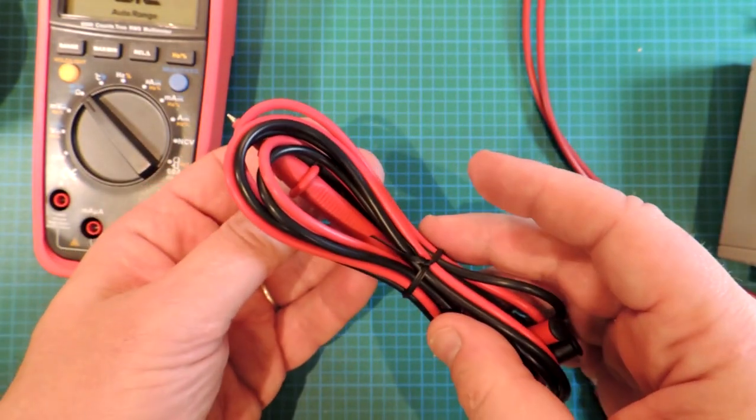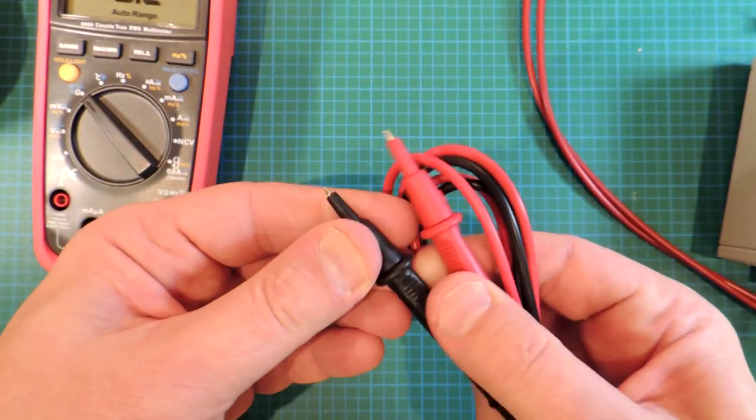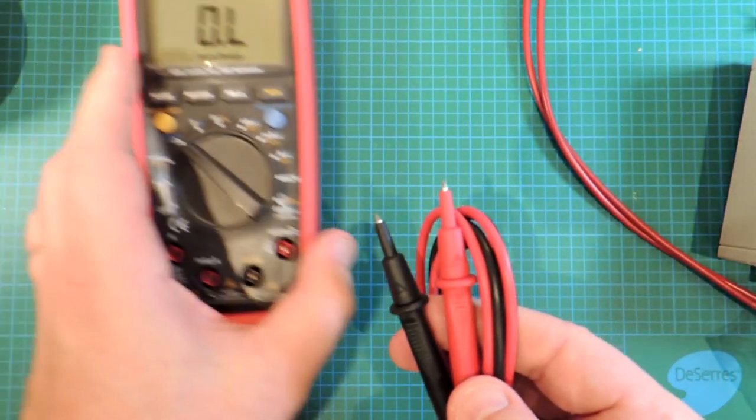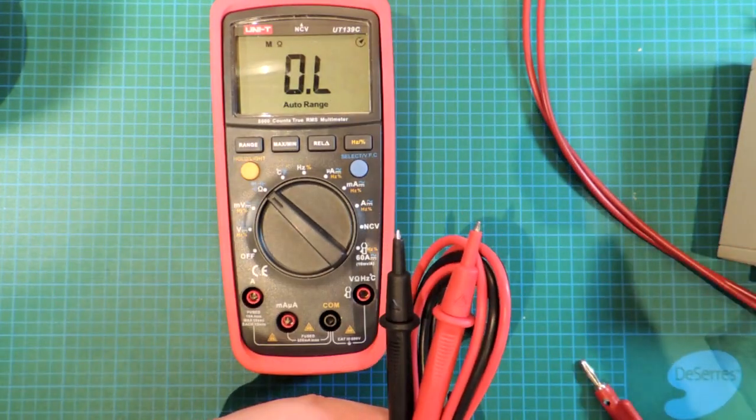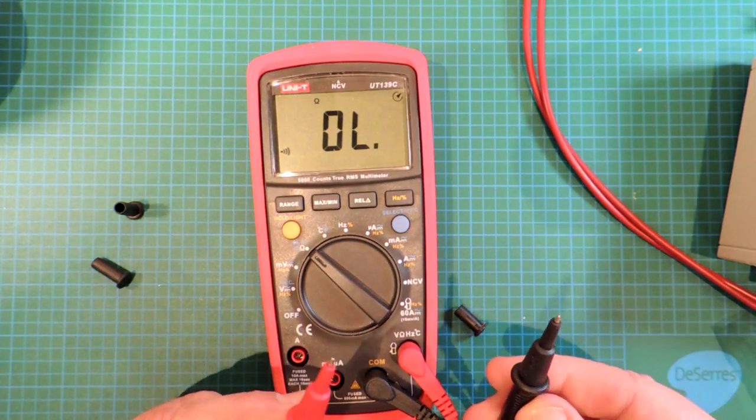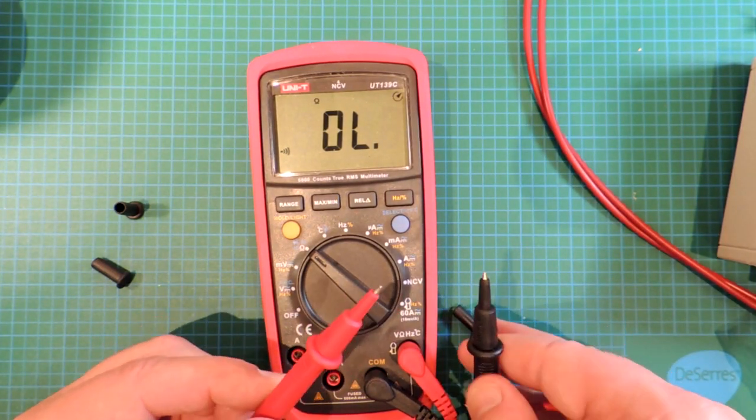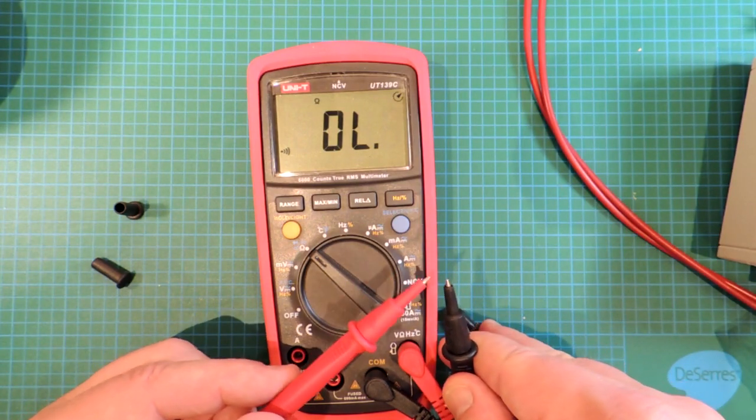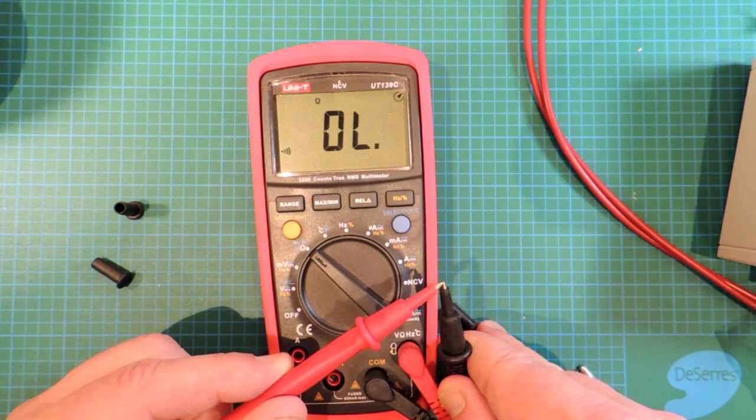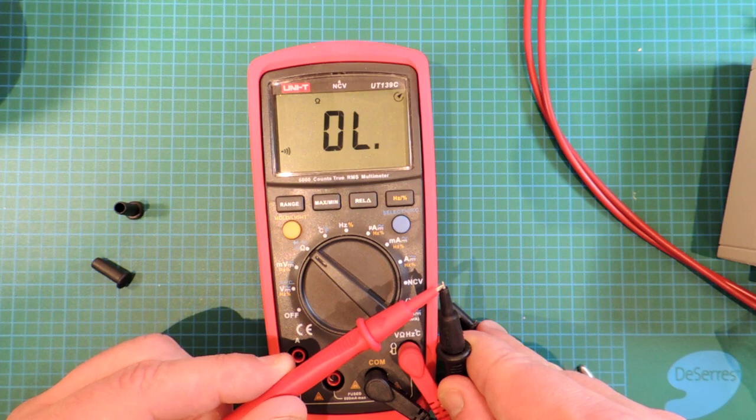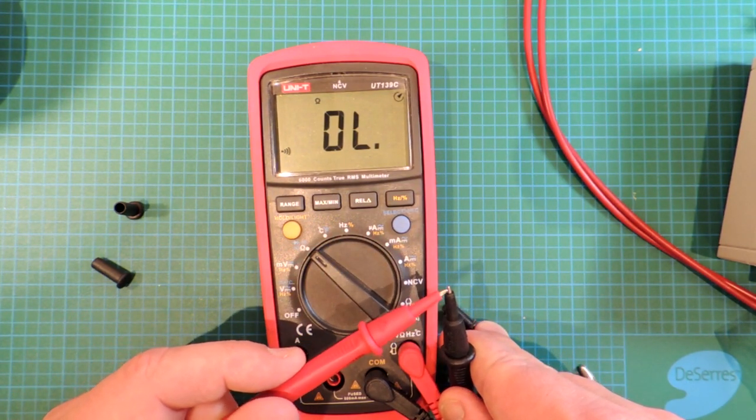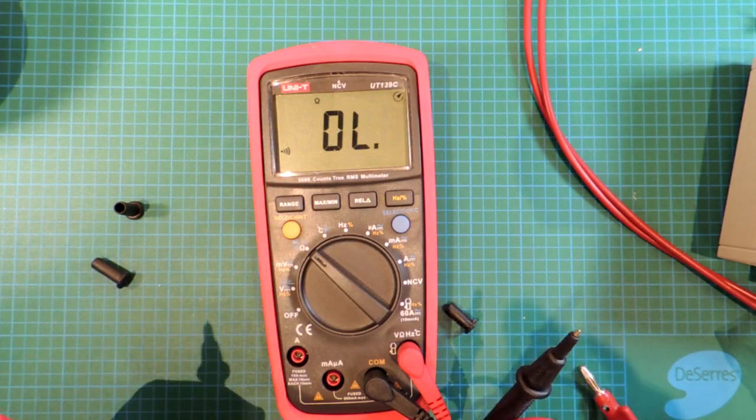The meter comes with a set of perfectly adequate leads. They're fine. They even come with a nice little cover, so you can reduce the amount of exposed metal, so you don't short out things. Let's talk about the continuity beeper. Some really low-end meters are a bit frustrating when you touch the leads together. They take a long time to sense whether there's a conductive path, which is a bit frustrating because often you're using it in troubleshooting. And this meter is just fine, actually. That would be frustration-free, I think.